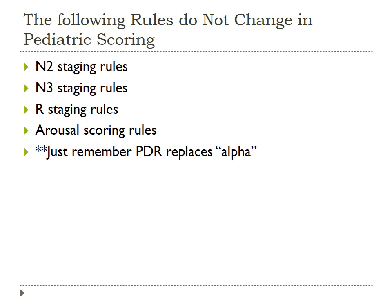For pediatrics, all other scoring rules are the same. N2, N3, and REM staging rules are all the same as adults. The only thing to remember is that if you don't have special characteristics — spindles, K-complexes, or slow-wave sleep — score those stages as N, non-REM sleep. Sometimes you can't tell the difference between N2 and N3 based on the child's age, so you score it as N. REM still follows the same rules. Arousal rules are also the same, and PDR replaces the term alpha throughout your adult scoring rules.